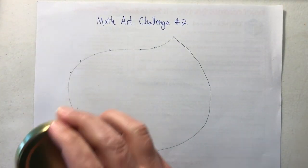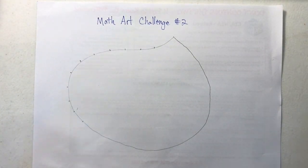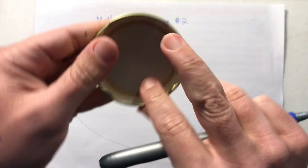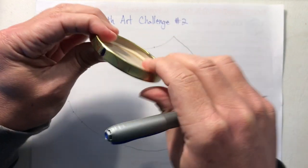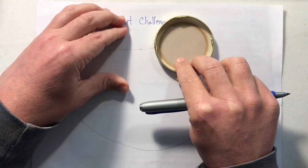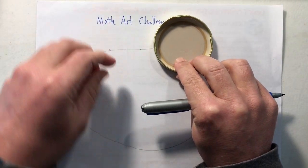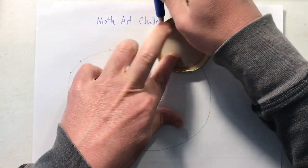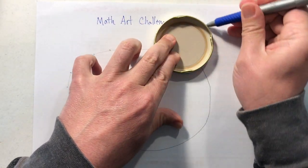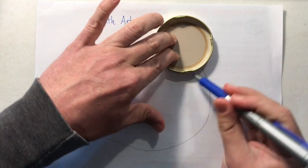All right, so what you do is you take your circle and what I'm going to do is I'm just going to line up that mark on each point like so and make a circle.